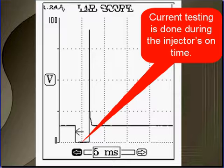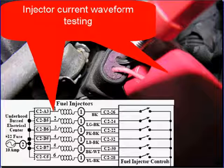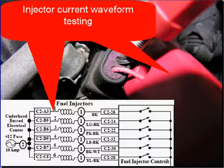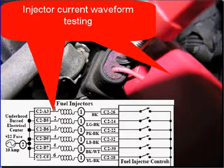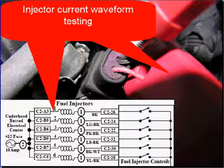Current testing is done during the injector's on time — when the computer drives the injector circuit low and turns it on. Injector current waveform testing can be done on B+, on the positive side of the injector, or the negative side. The only difference is you may have to turn your probe around to get the pattern to go up and down instead of being upside down.